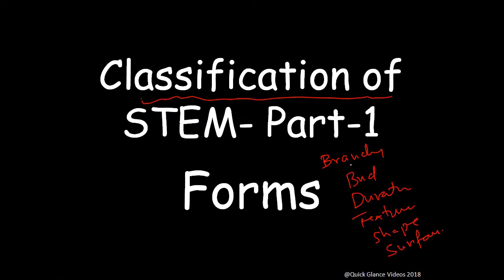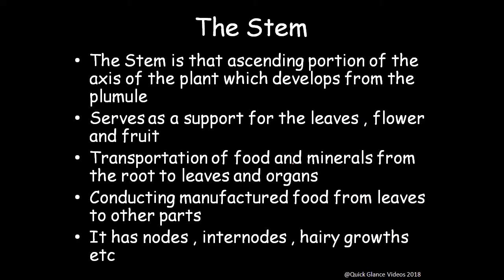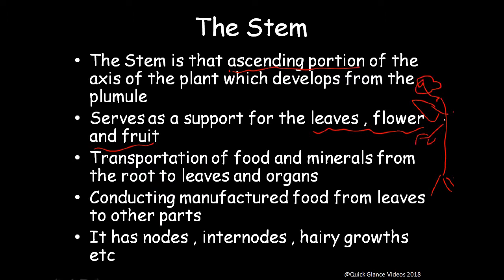In this part we will cover stems on the basis of forms. The stem is the ascending portion of the axis of the plant, which develops from the plumule and serves as a support for leaves, flowers, and fruit. It also handles transportation of food materials and minerals from root to leaves, and conducts manufactured food from leaves to other parts. It has nodes, internodes, and hairy growth.